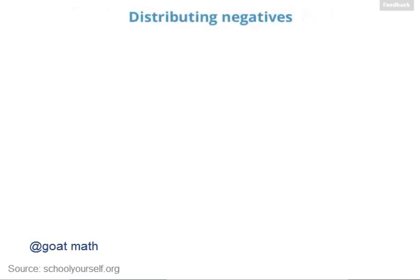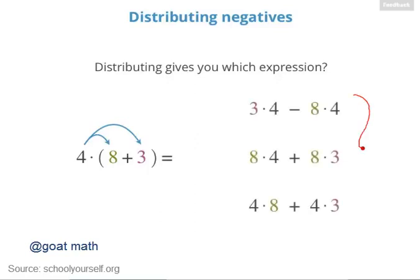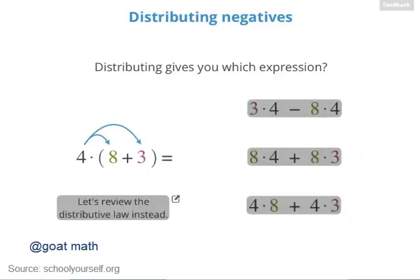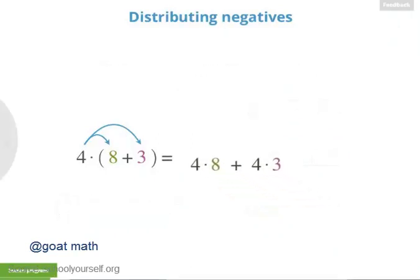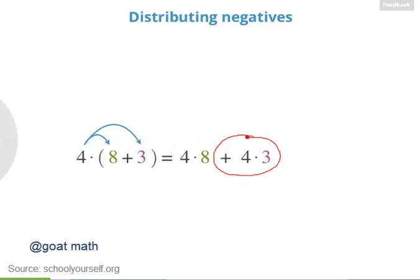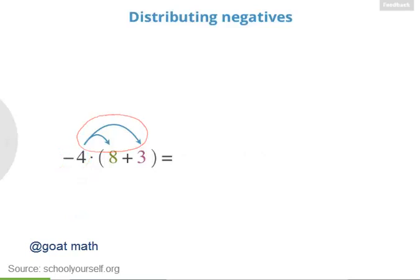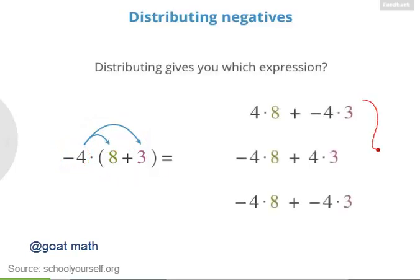Here we'll look at the distributive law with negative numbers. Suppose you have 4 times 8 plus 3, with the 8 plus 3 in parentheses. Distributing the 4 onto the addition gives you which of these expressions? Suppose the number outside the parentheses is negative 4. Well, we can still use the distributive law, but now we're distributing a negative number onto the addition inside the parentheses. So which of these expressions do you get from the distributive law?